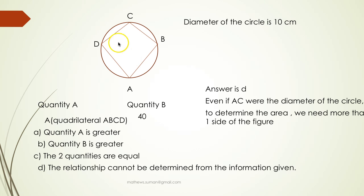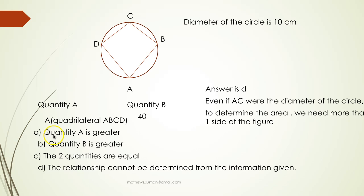The diameter of the circle is 10 centimeters. We need to compare two quantities A and B, where A is the area of quadrilateral ABCD and B is 40. There are four possibilities: quantity A is greater, quantity B is greater, the two quantities are equal, or the relationship cannot be determined from the information given.